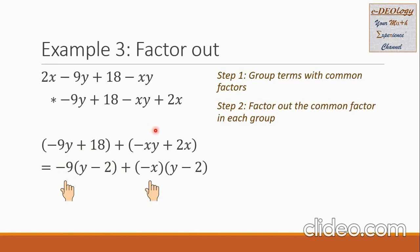For the second group, I want y to be positive too, so I factor out negative x. What remains is positive y and then negative 2. Checking: negative x times y equals negative xy, and negative x times negative 2 equals positive 2x. So these factors are correct for the second group.